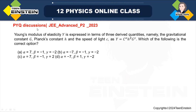Hello students. Welcome to the PYQ discussions on JEE Advanced Papers. I have got a problem from JEE Advanced Paper 2 of 2023. The problem says: Young's modulus of elasticity, Y, is expressed in terms of three derived quantities — namely, the gravitational constant G, Planck's constant h, and the speed of light C — as Y equals C to the power alpha, h to the power beta, and G to the power gamma.